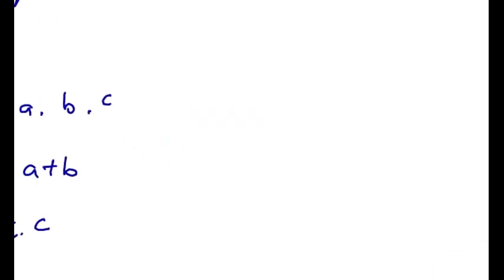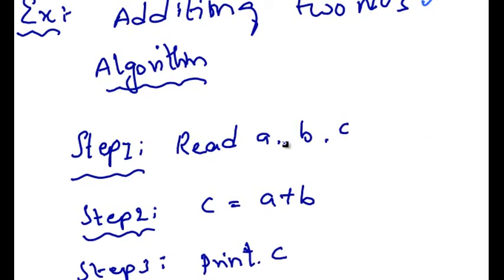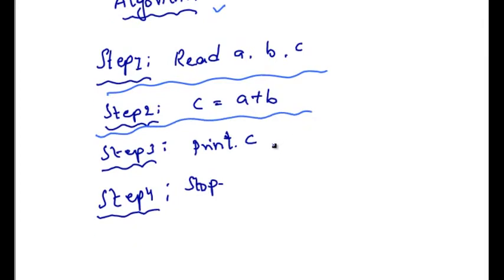Now let's consider an example of addition of two numbers and sketch an algorithm and a flowchart for them. Algorithm for addition of two numbers. Step 1: Read the values of a, b, c. Step 2: c is equal to a plus b is the operation we need to perform.